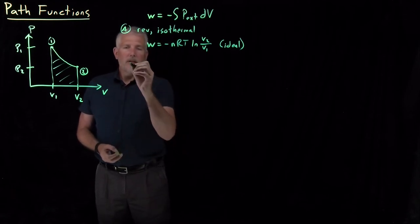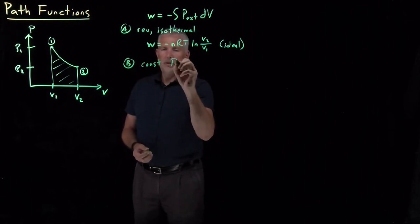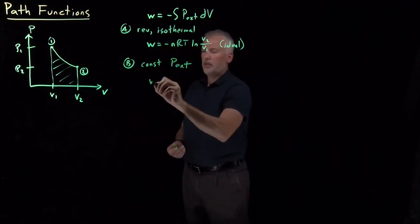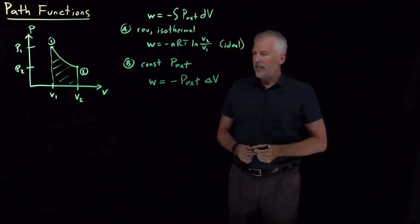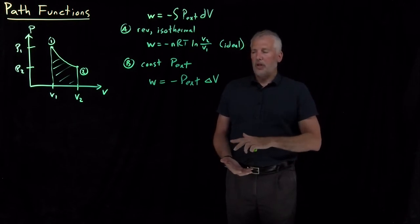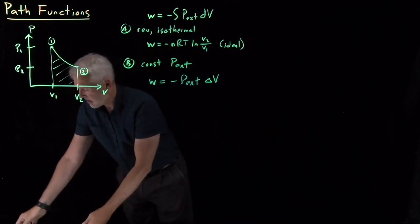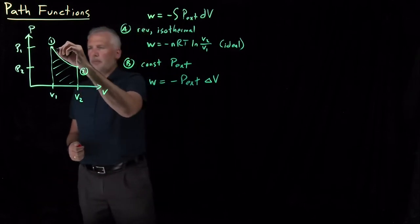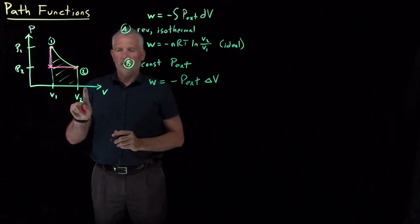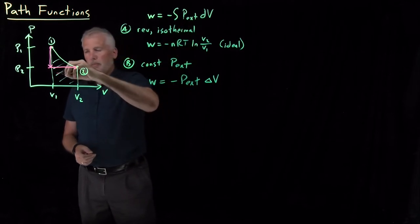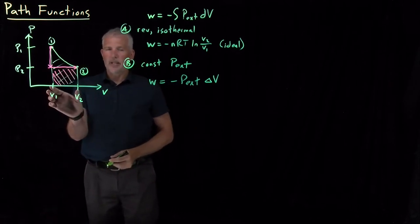In contrast, for expansion against a constant external pressure, the work is just the external pressure times the change in volume with a negative sign. Instead of releasing the pressure slowly, the pressure is released immediately and the gas expands against this constant external pressure — equal to the final pressure. We drop the pressure immediately down to that value and then let it expand at constant pressure from V1 all the way to V2. We're still calculating the area under a curve, but now it's the area under the pink curve rather than the green curve.